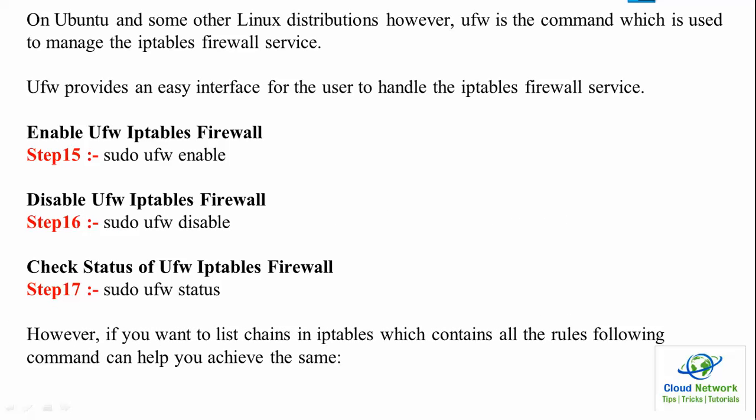If you want to list the chains in IP tables, you can use the iptables -L command. Steps 15 through 18 are commands to use on Debian, Linux Mint, and Ubuntu operating systems.